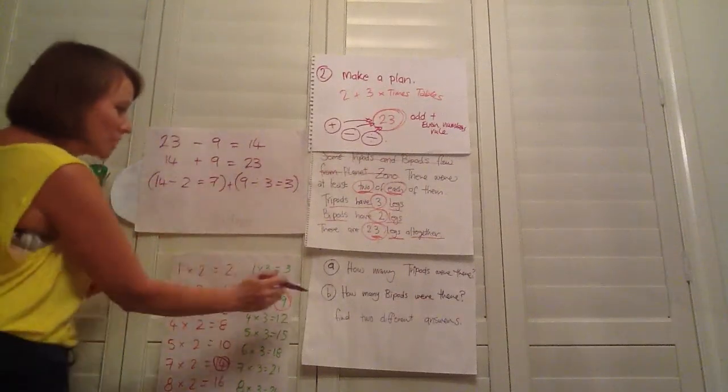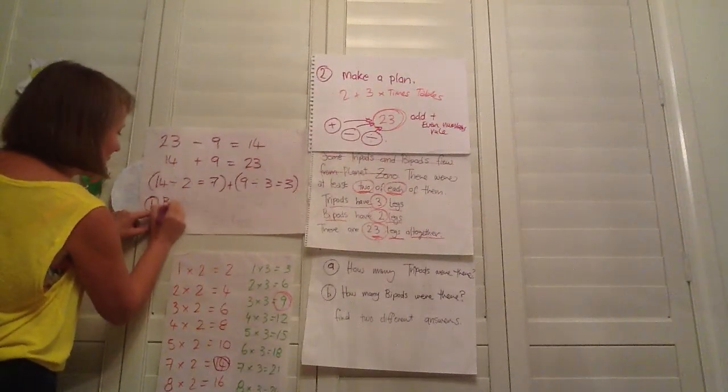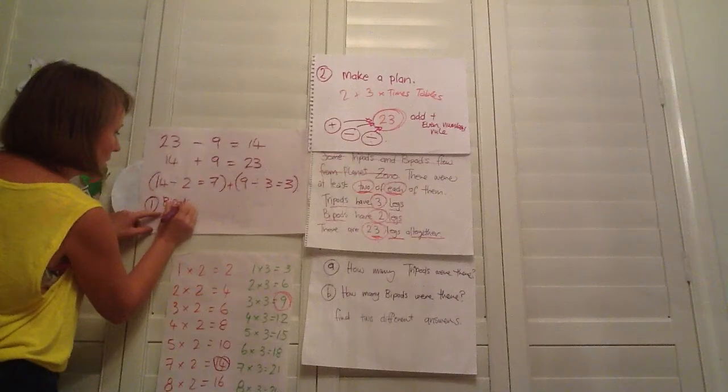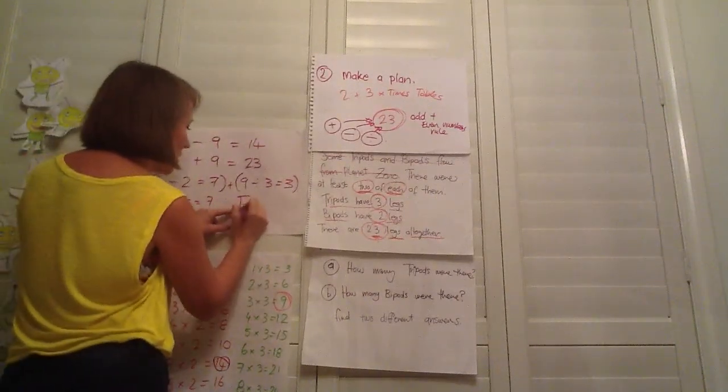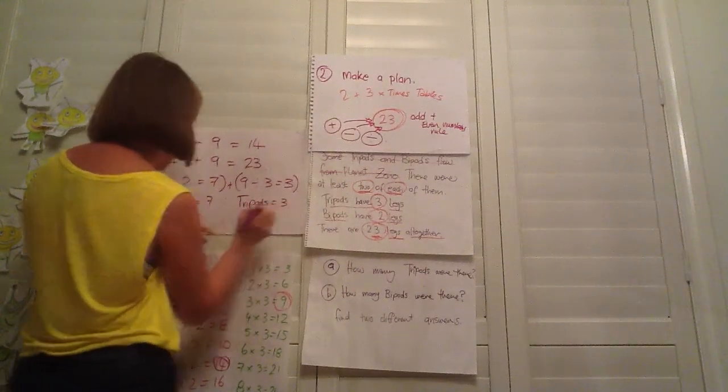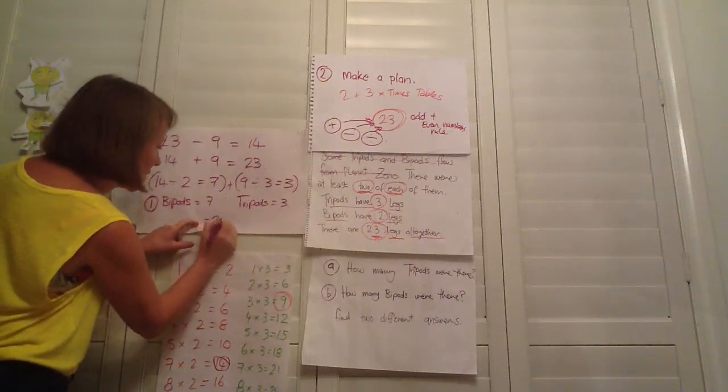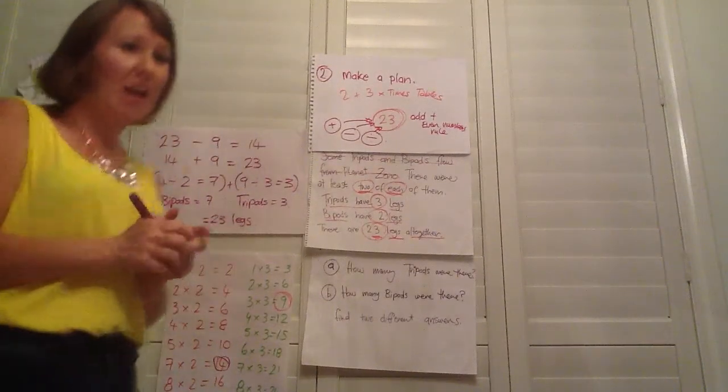And 14 divided by two because we know that two times seven plus nine divided by three equals three. So to begin with, our first answer, number one, is bipods equals seven and tripods equals three. And that should add up to 23 legs in total. So let's check out our answer.